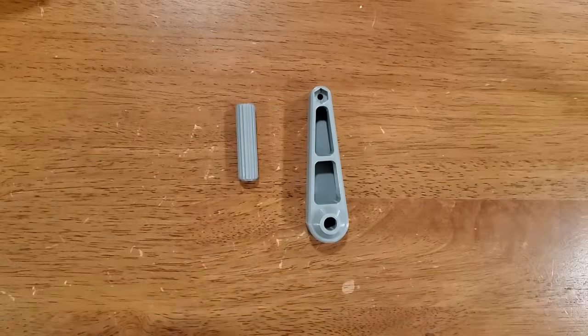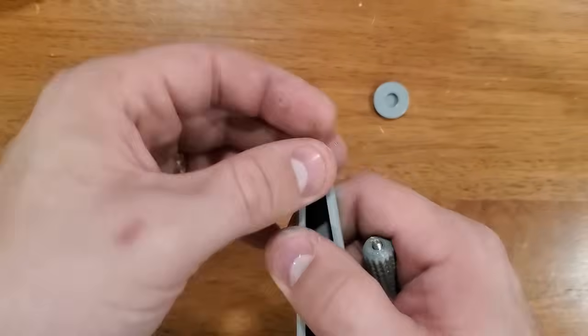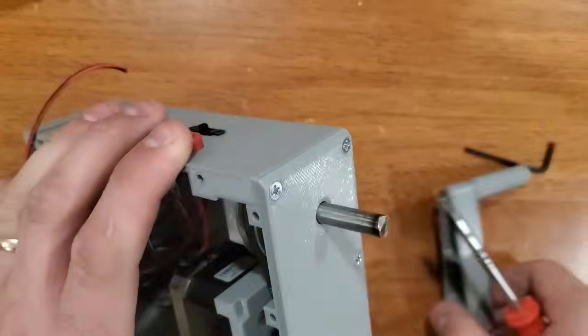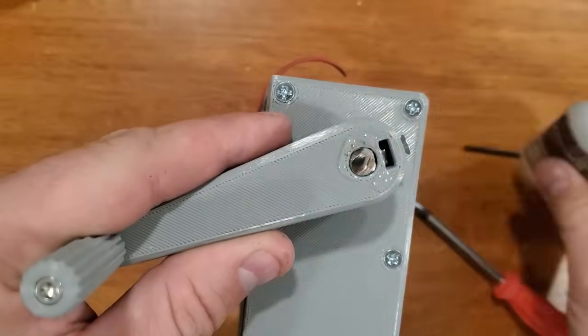Now I need to power this thing so I printed a crank that installs onto my pulley shaft. Threaded holes won't hold on PLA so I use a captive steel nut inside the crank to tighten my set screw against.